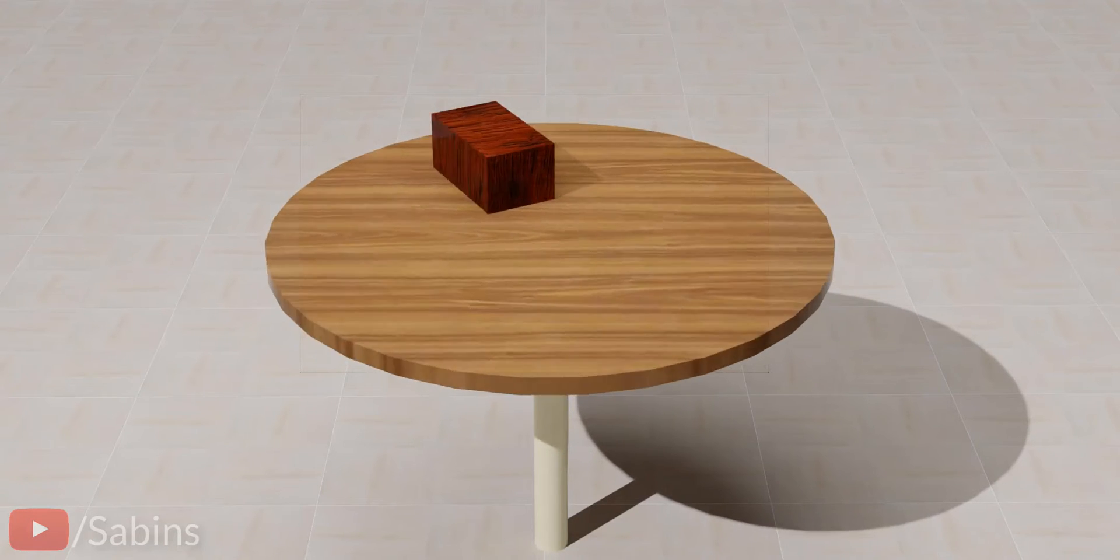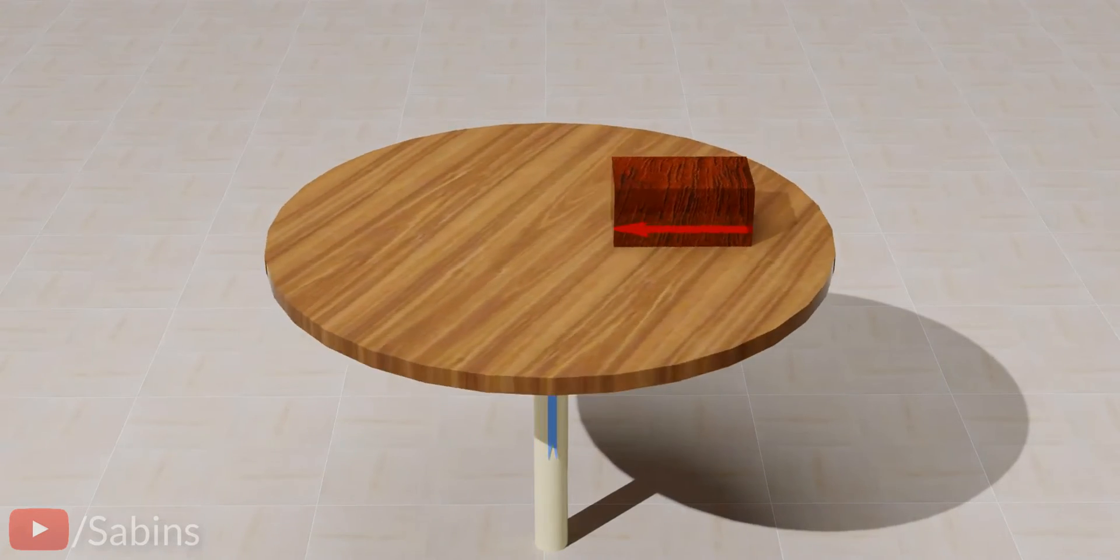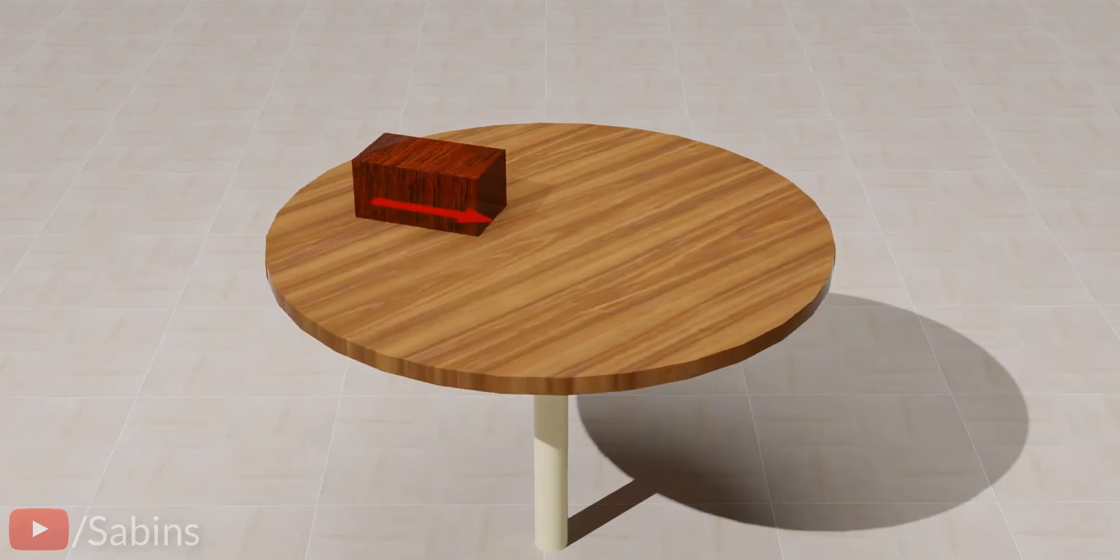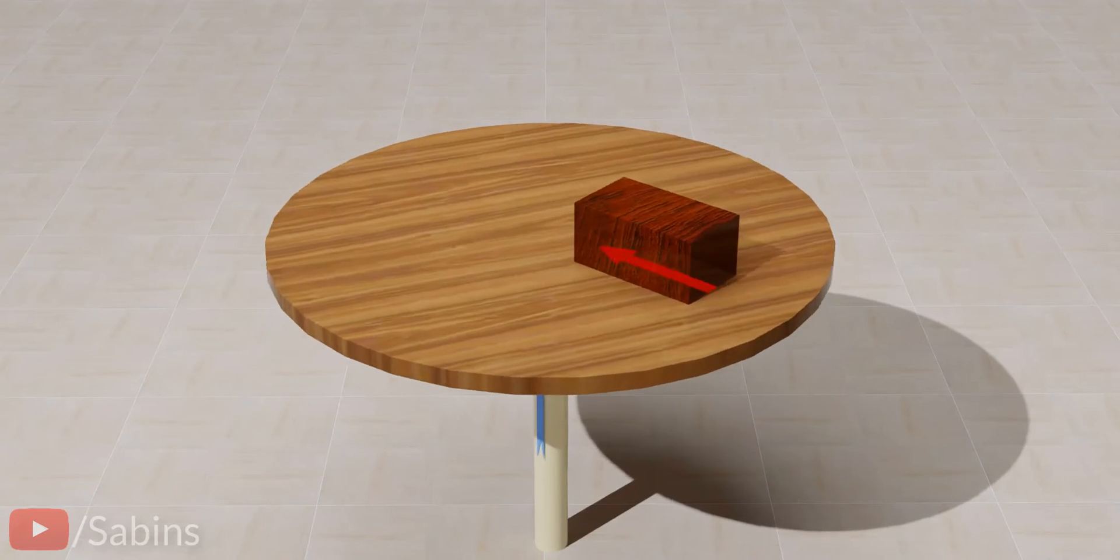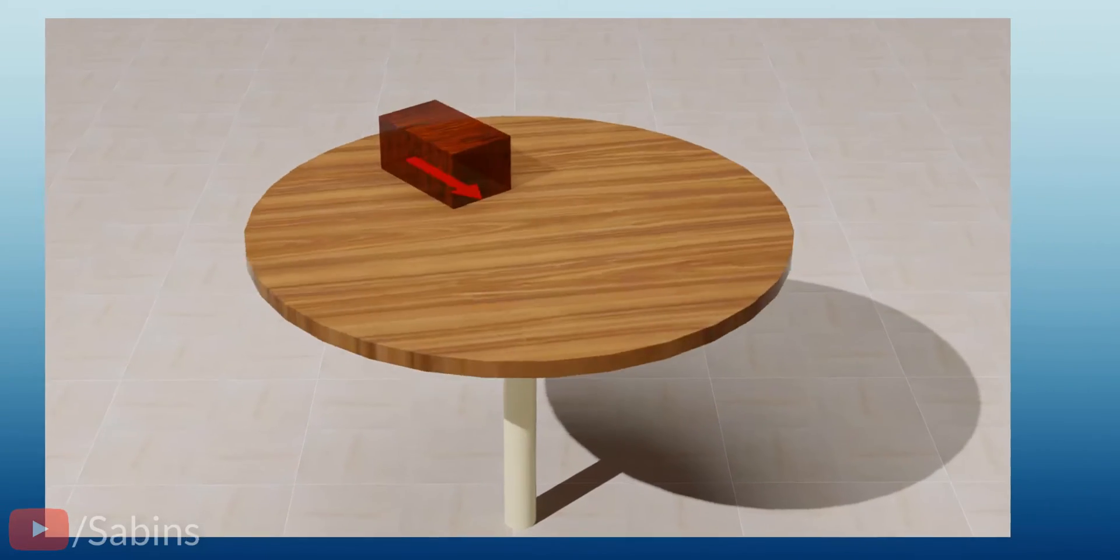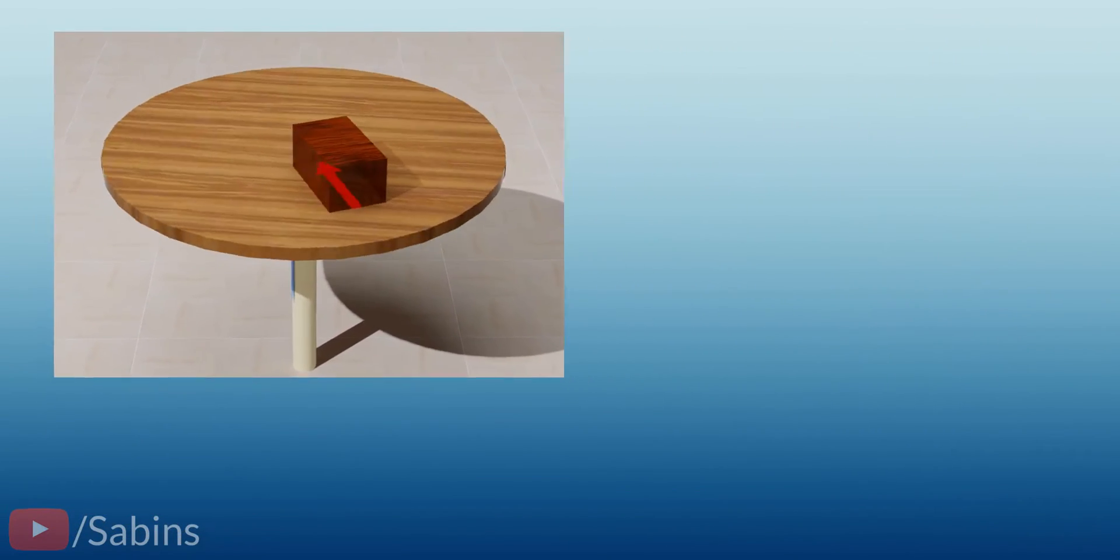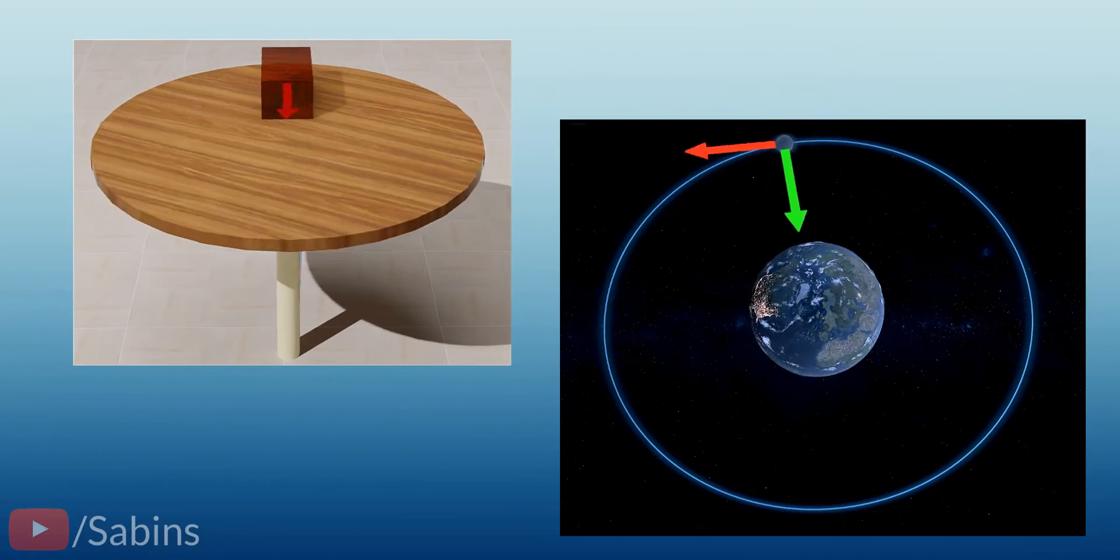Consider this spinning wooden block. The frictional force between the block and floor lends the necessary centripetal force. In short, centripetal force should be supplied by some external source such as gravitation, tension, friction, etc.